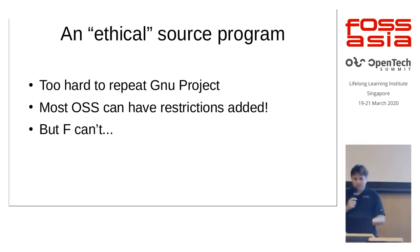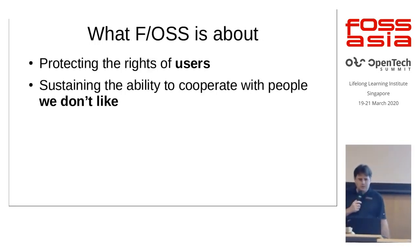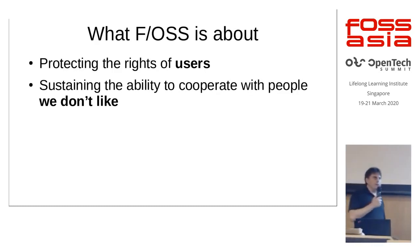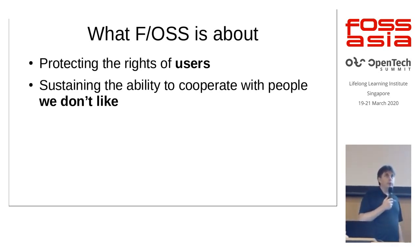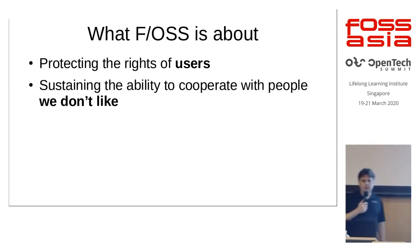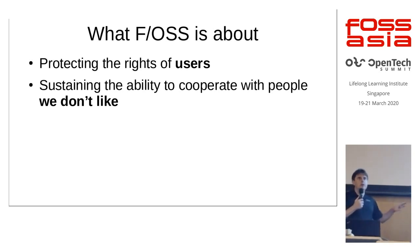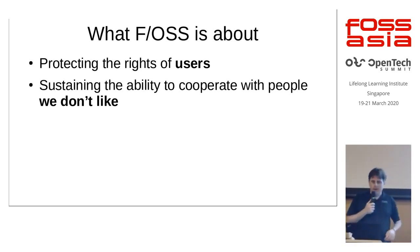To close: although it's very rarely actually stated this way, these are the two things FOSS is about. Free software is about protecting the rights of users of software so that developers don't gain domination or control over them. Open source is about sustaining the ability to cooperate across enormous differences in time zone, geography, culture, ethics, politics, and commercial competition. Thank you.